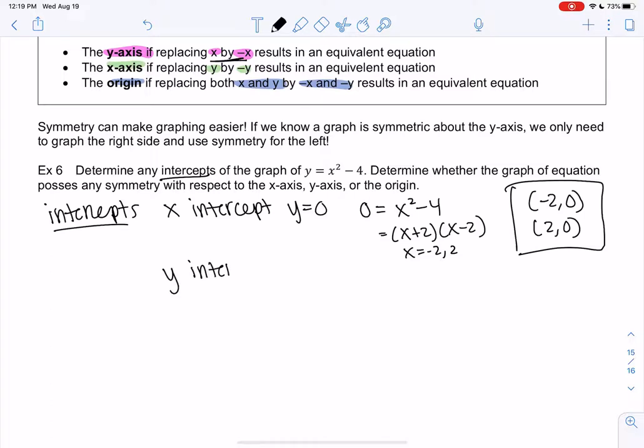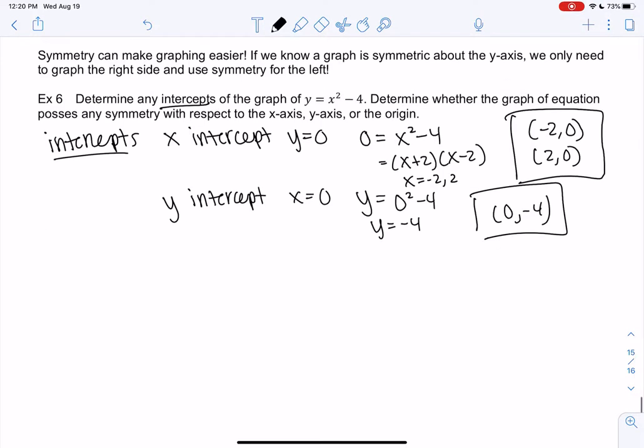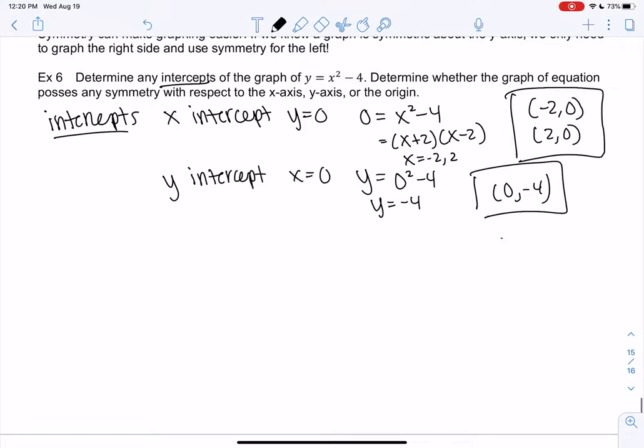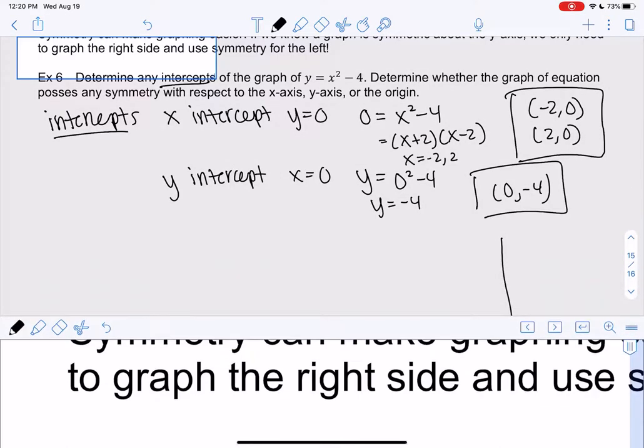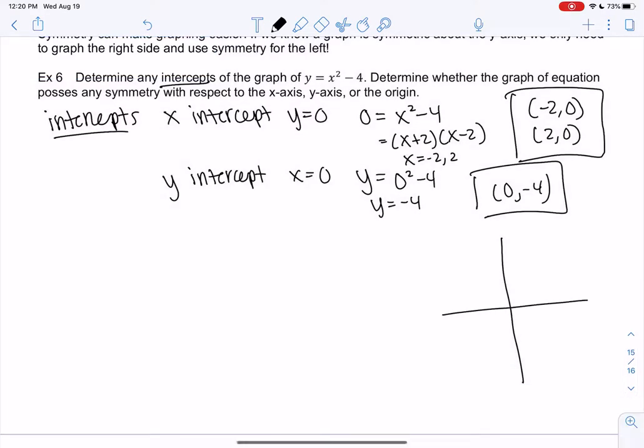My y-intercept is when x equals 0, so y equals 0 squared minus 4. So y is negative 4. So 0, negative 4. So I'll plot those to help us. So we can check out the graph as we do this. 0, negative 4, 1, 2. We might remember the shape of a quadratic, so we'll see it in a second. But we'll see how the symmetry plays out.